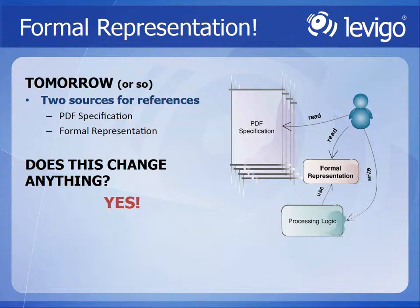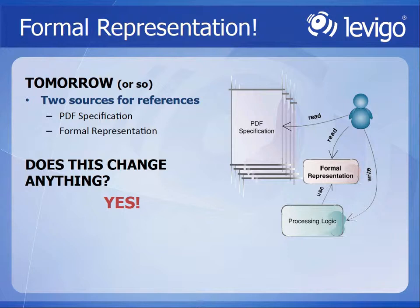So what could we do if we formalize such a thing into something machine-readable? We have two sources: the PDF specification as the master source, and if we had a formal representation — a kind of rule set — we could use that for a reference. I'm a developer. I pretty much like the sentence 'use the source, Luke.' Documentation is only for the others. I love to look into code. If I had a formal representation that I could use in my software to do anything with it, that would be great. And does this change anything? I totally have the opinion that it does, it really does.